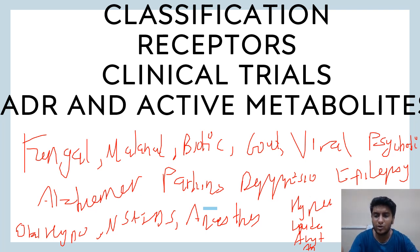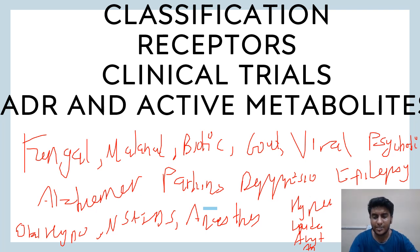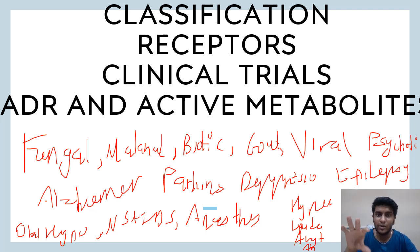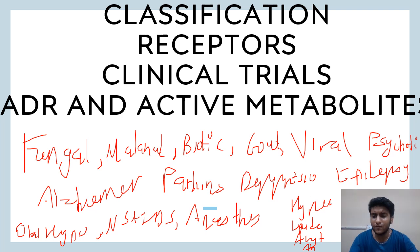For Parkinson's also know tolcapone and entacapone as COMT inhibitors. For Alzheimer's: rivastigmine, ginkgo biloba, piracetam. For depression: SSRIs and SNRIs — fluoxetine, paroxetine, citalopram, amitriptyline. For epilepsy, know anti-epileptic drugs: phenytoin, ethosuximide, carbamazepine, valproic acid, topiramate, tiagabine, vigabatrin, and others. For local anesthetics: lidocaine and lignocaine.